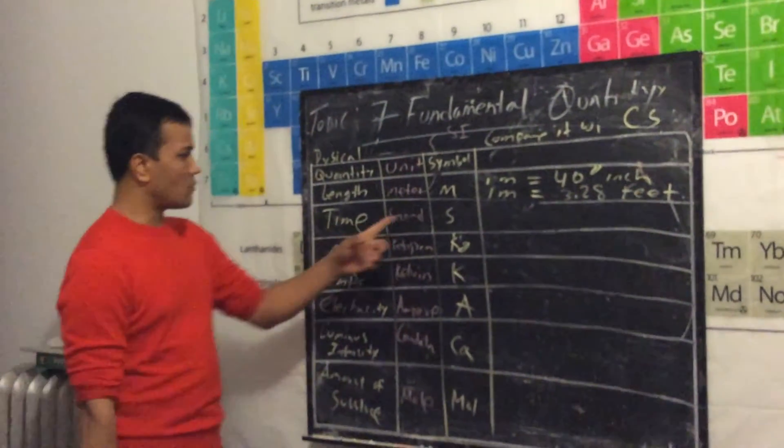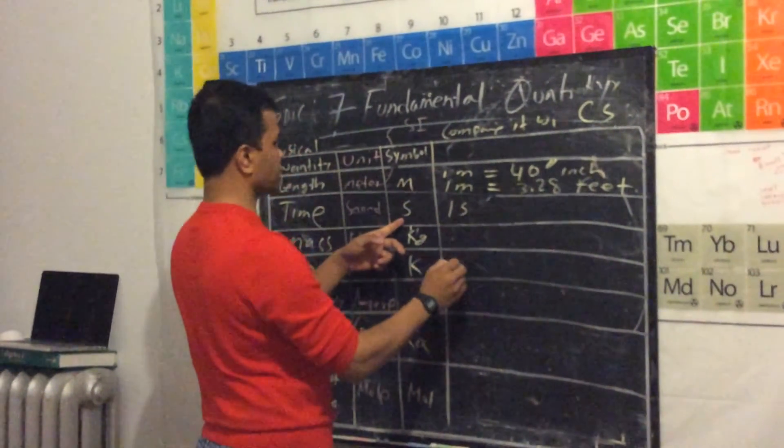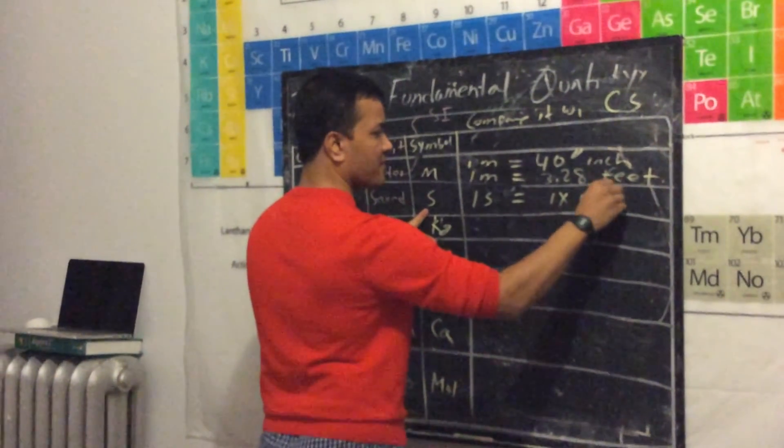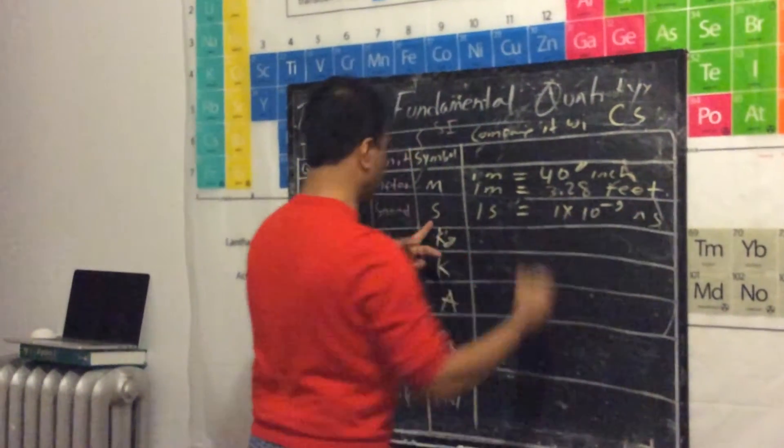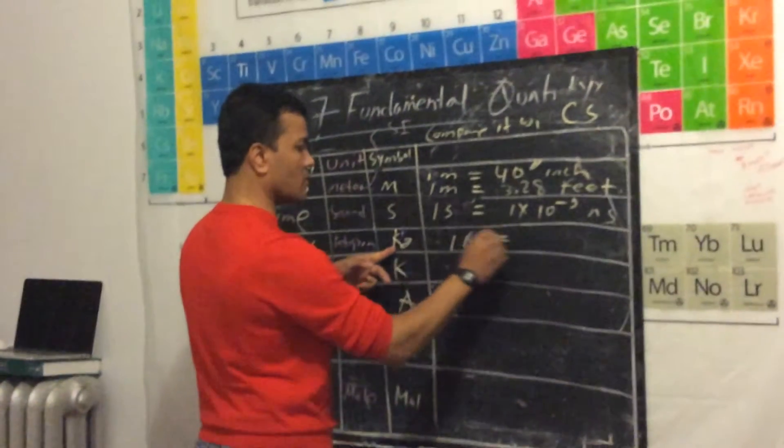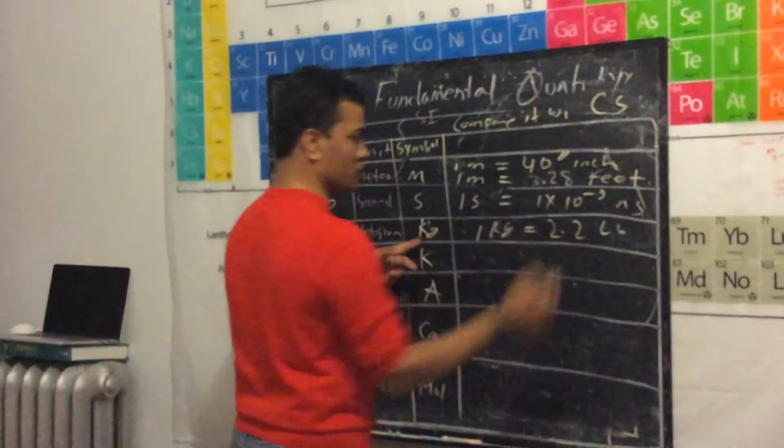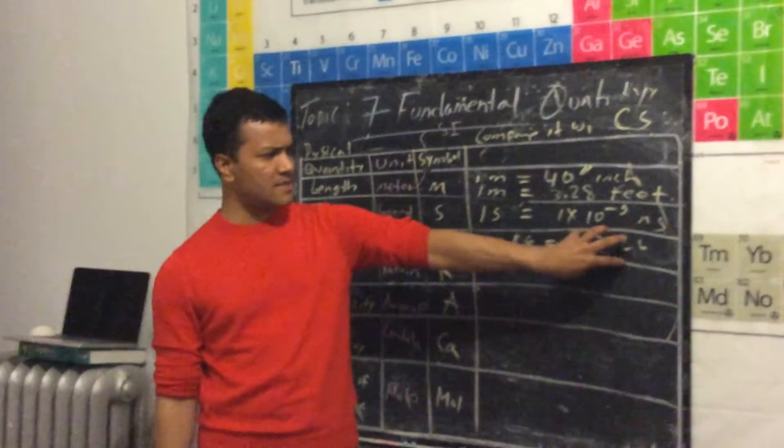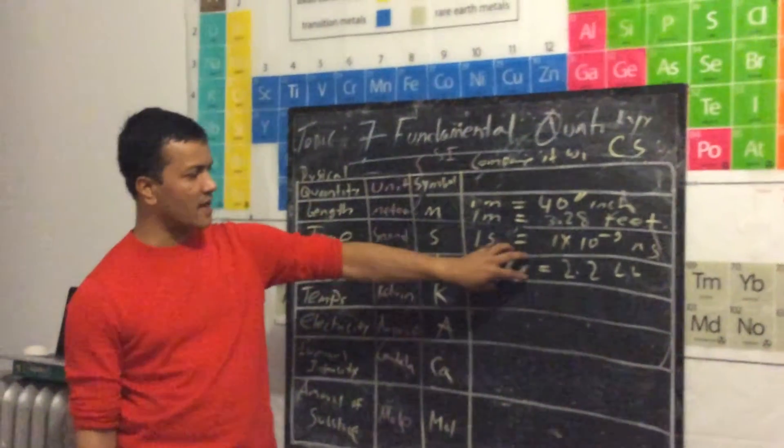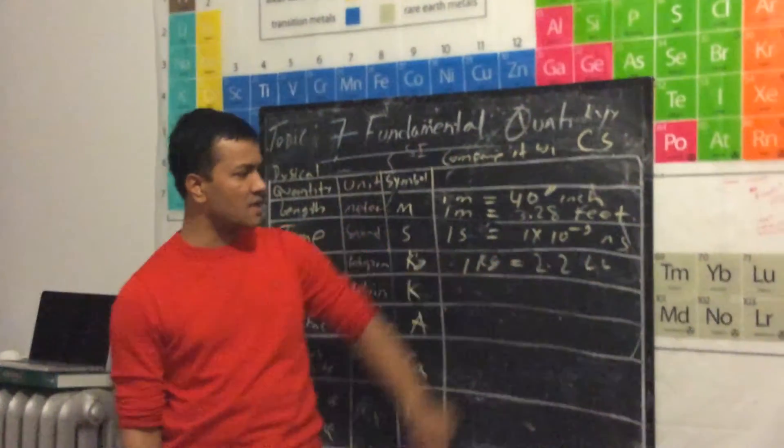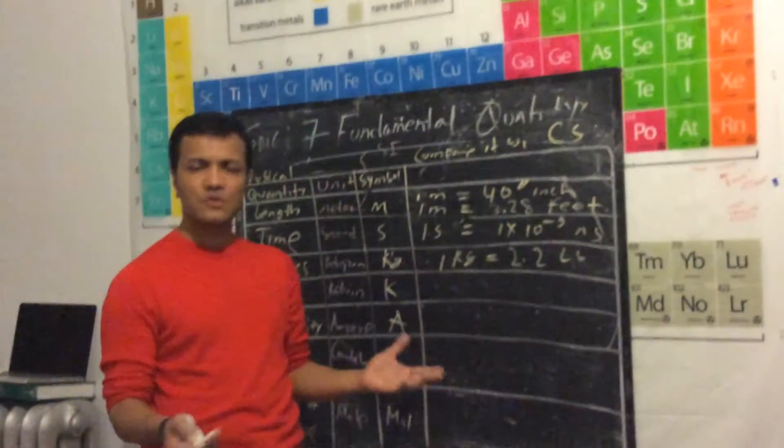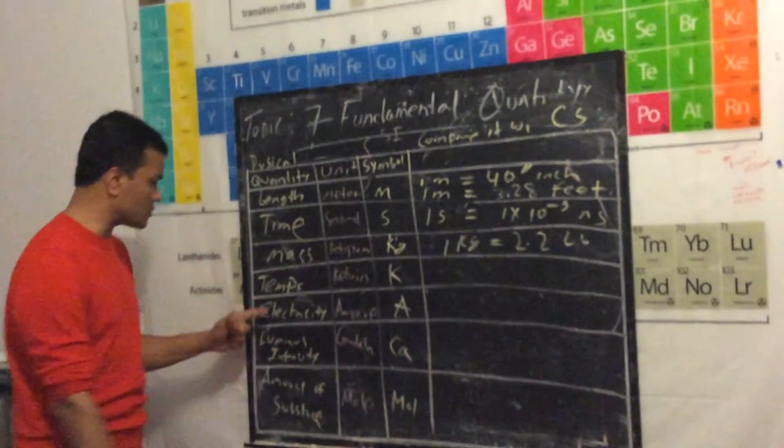One second is one times 10 to the power negative 9 nanoseconds. Mass: one kilogram is equal to 2.2 pounds. That is, in customary system we call it pound, in metric system we call it kg. This is the language for scientists. Regular people still use pound, so this is the comparison: one kg is about 2.2 pounds.